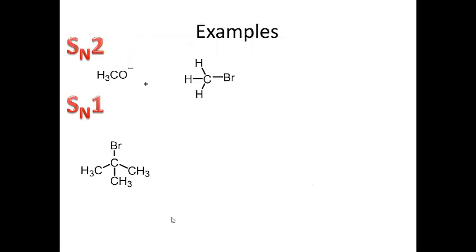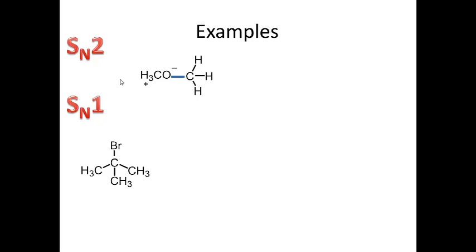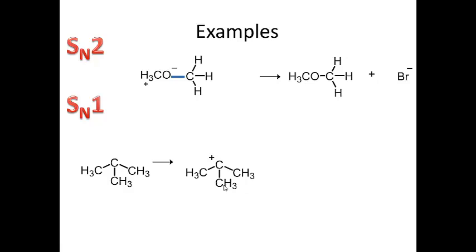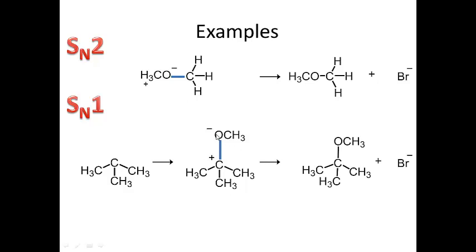Here's an SN2 example: a methyl substrate with a methoxide nucleophile. The nucleophile attacks and expels bromine, forming a new carbon-oxygen bond in the product, with bromine as the leaving group. For the SN1 example: bromine leaves first to give a carbocation intermediate. The nucleophile then comes in and attacks that intermediate, forming a new bond between the nucleophile and the reactive site — giving a product with a new carbon-oxygen bond, and bromine as the leaving group.